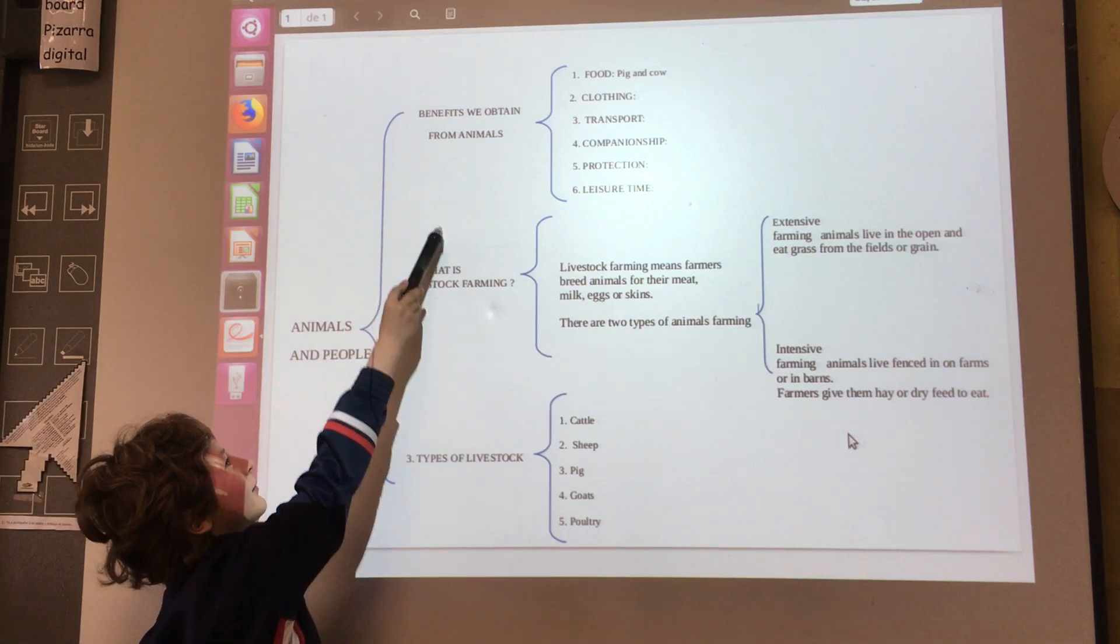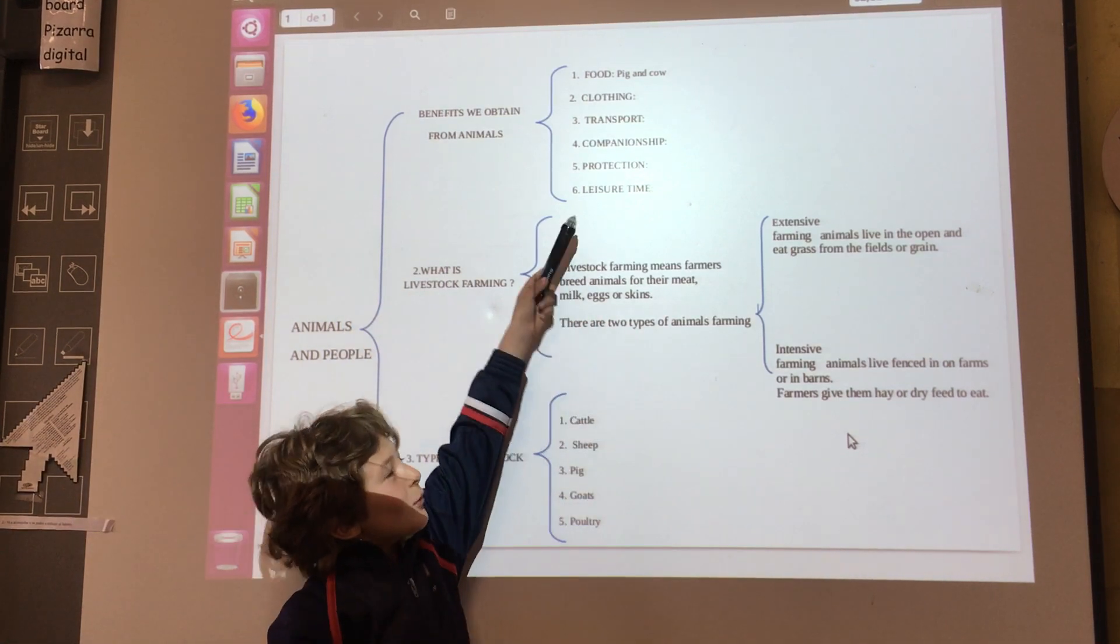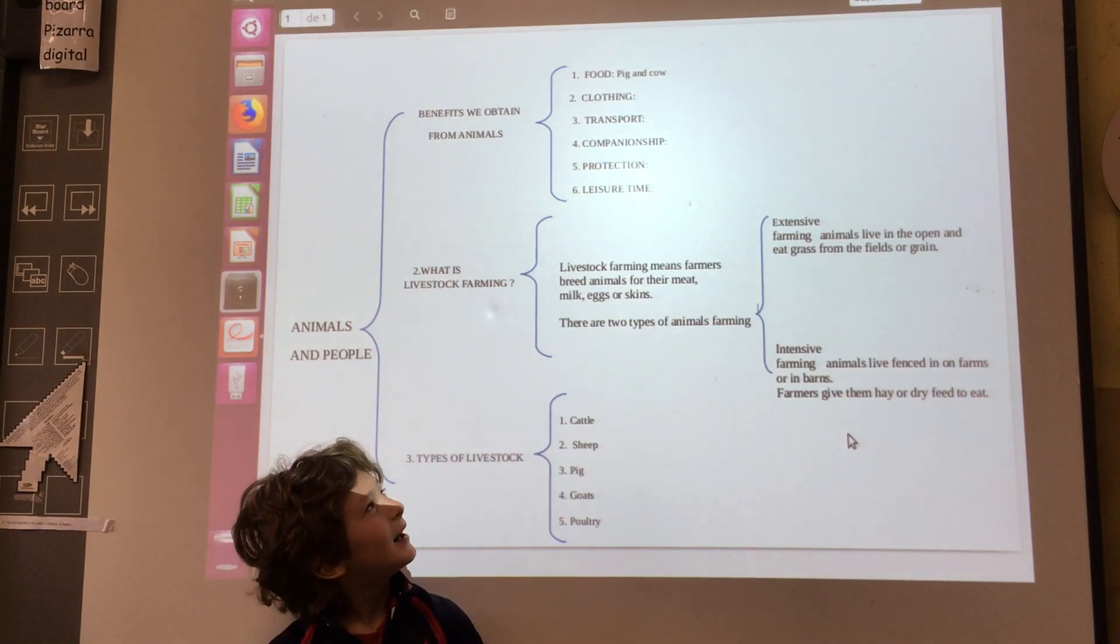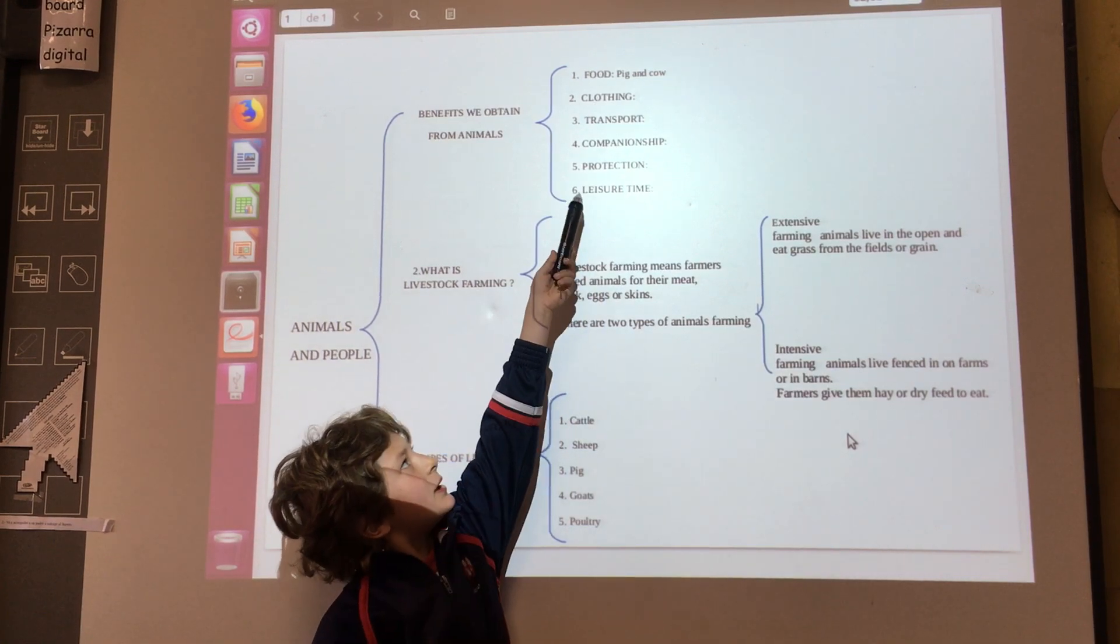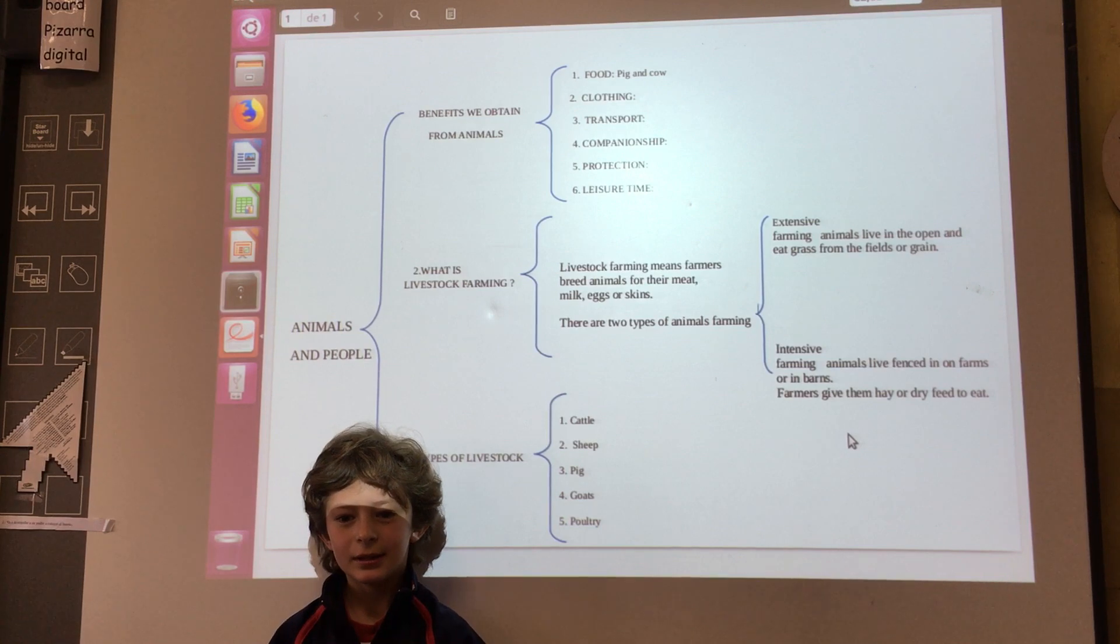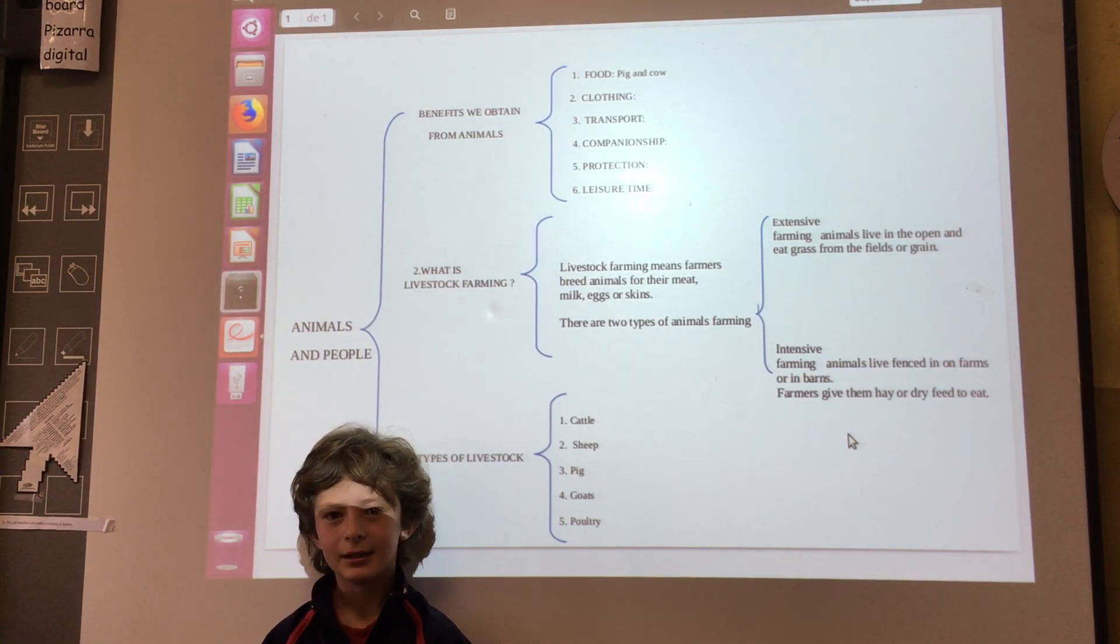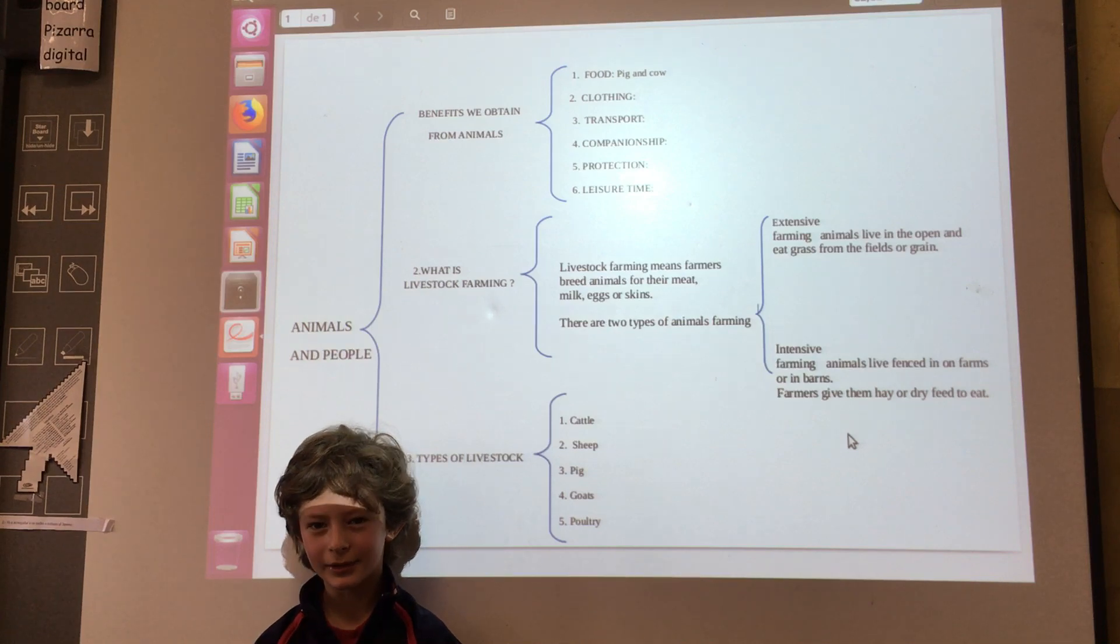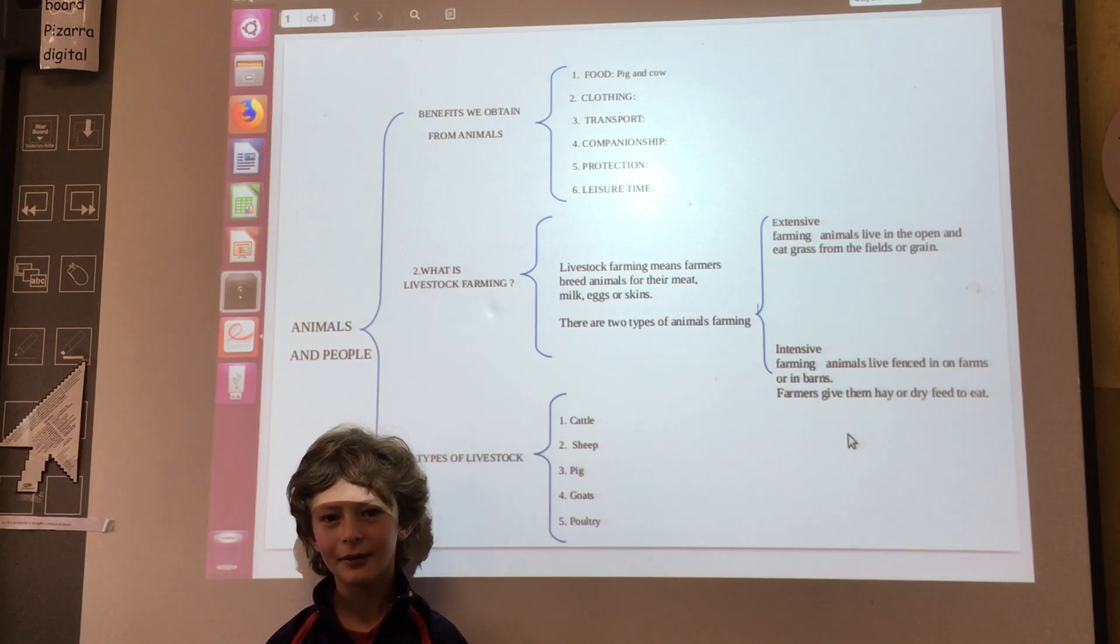Many things link people and animals. One, food. Two, clothing. Three, transport. Four, horse and donkey. Companion. Protection. Five, leisure time. Fish and cow.